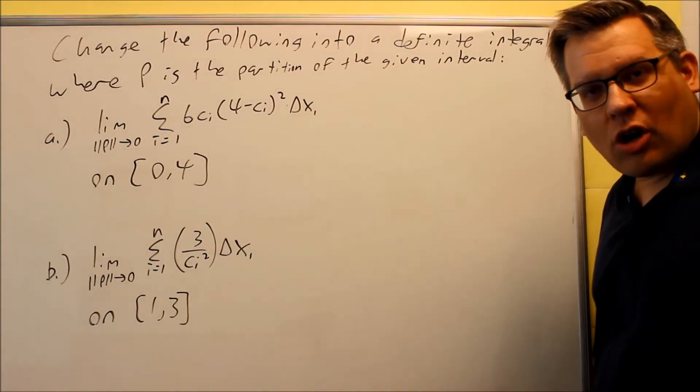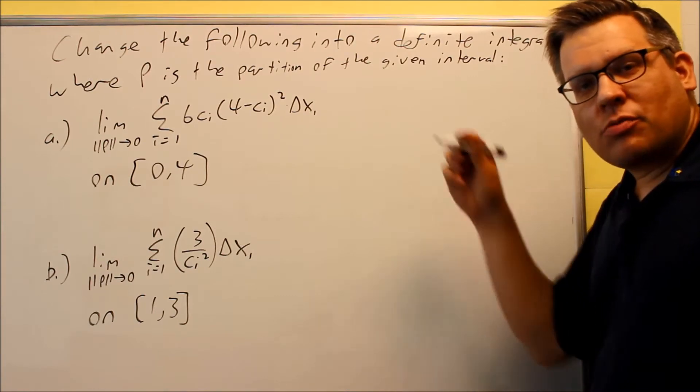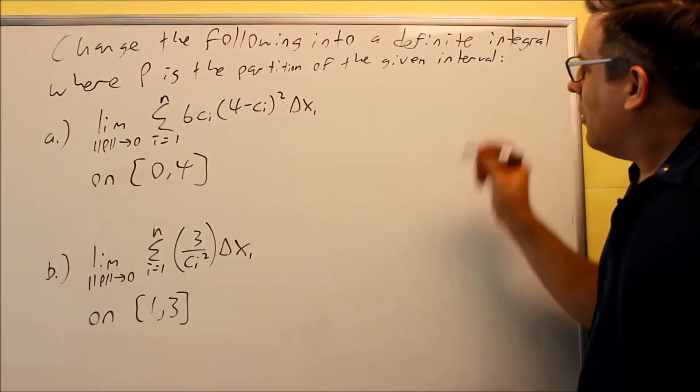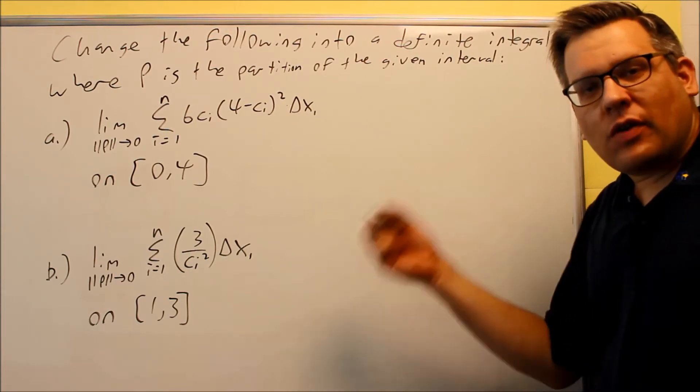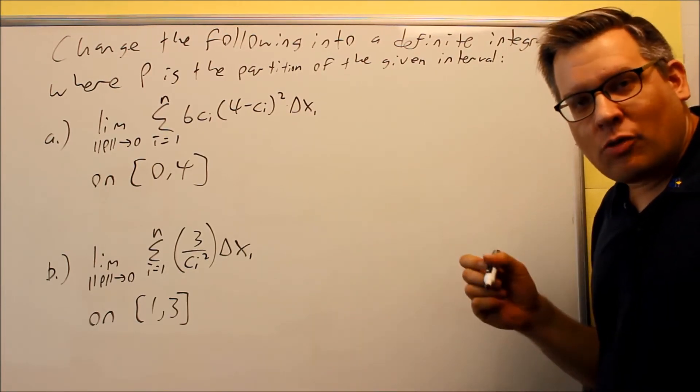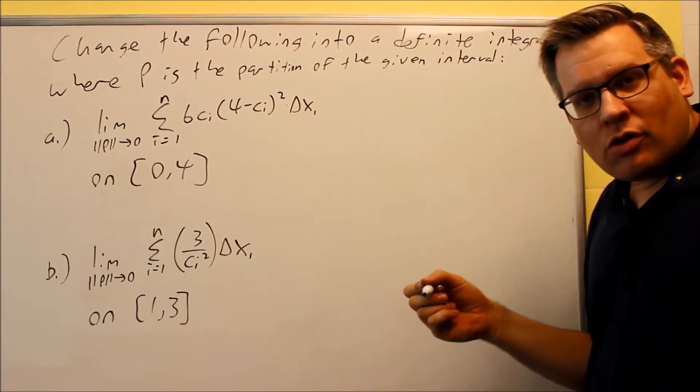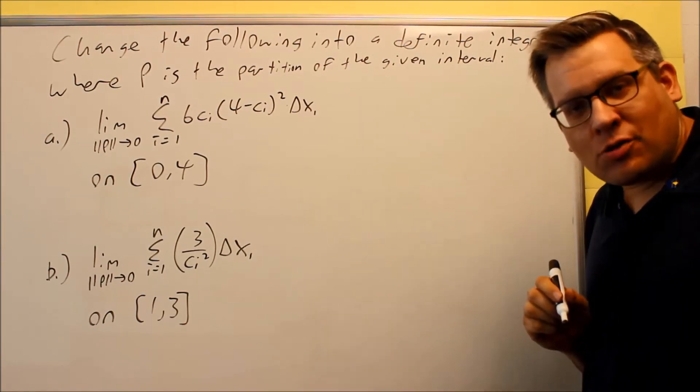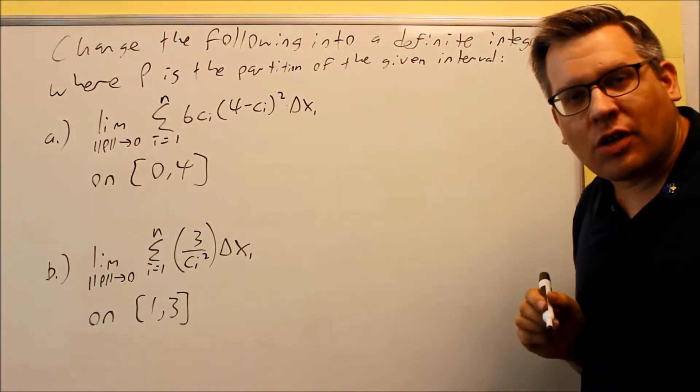Okay, so these problems we're not going to solve. All we're going to do is convert them over into the notation by using the integral symbol. The word definite integral - we have definite and we have indefinite integral. A definite integral means that you have the integral sign with two numbers given on it. Indefinite integral, like the ones we did before with antiderivatives, means that we have the plus C on the end. Those do not have any numbers on the integral sign.